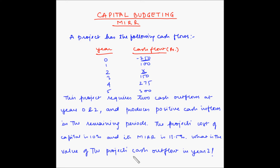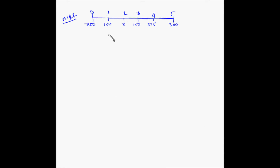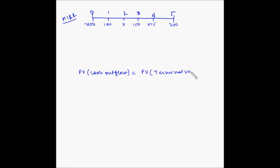We have to find out the value of the project's cash outflow in the second year. We have been given the cost of capital and the MIRR. This is the cash flow representation on the time scale. MIRR is that discount rate at which the present value of the cash outflows becomes equal to the present value of the terminal value of cash inflows.